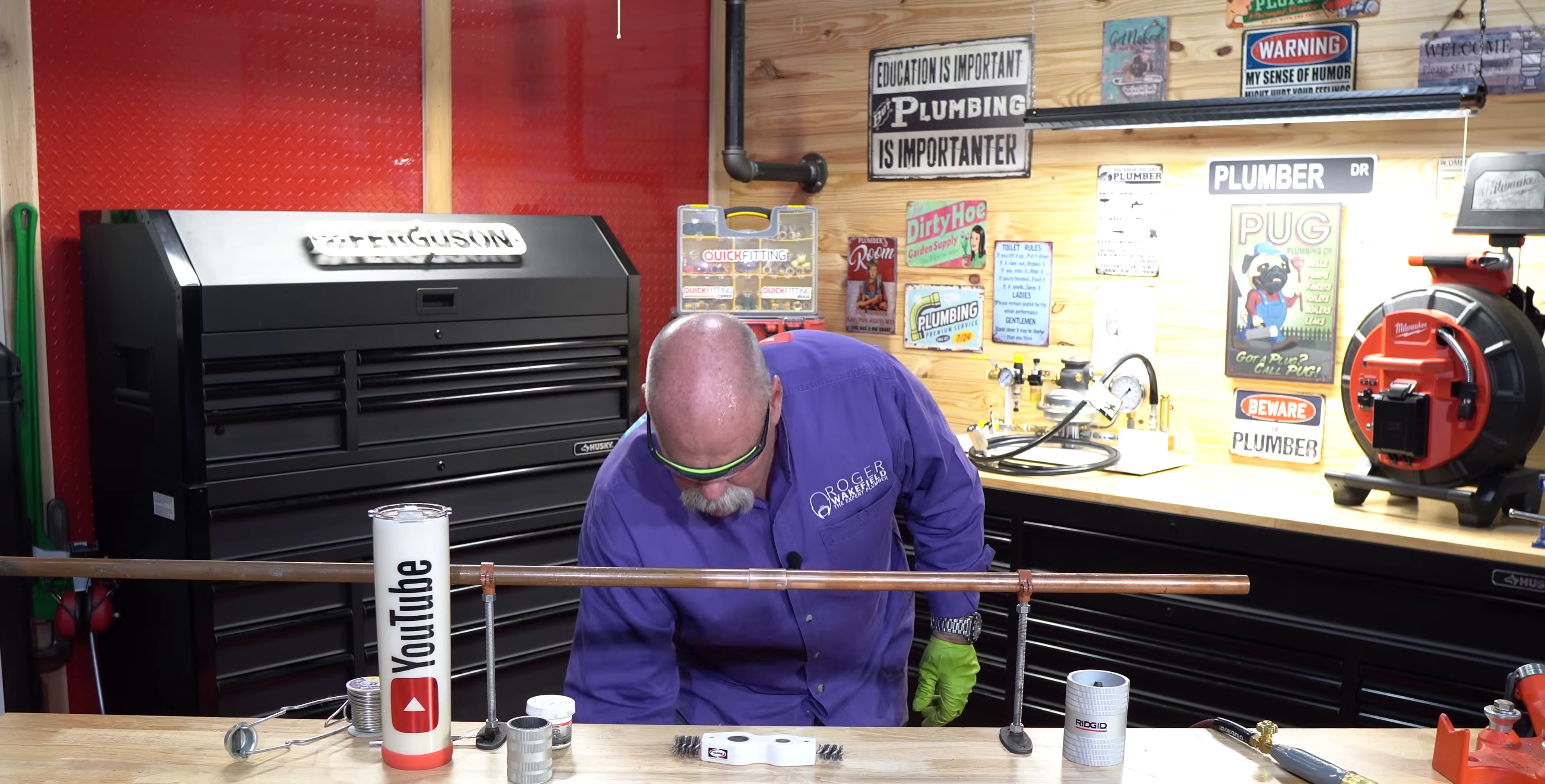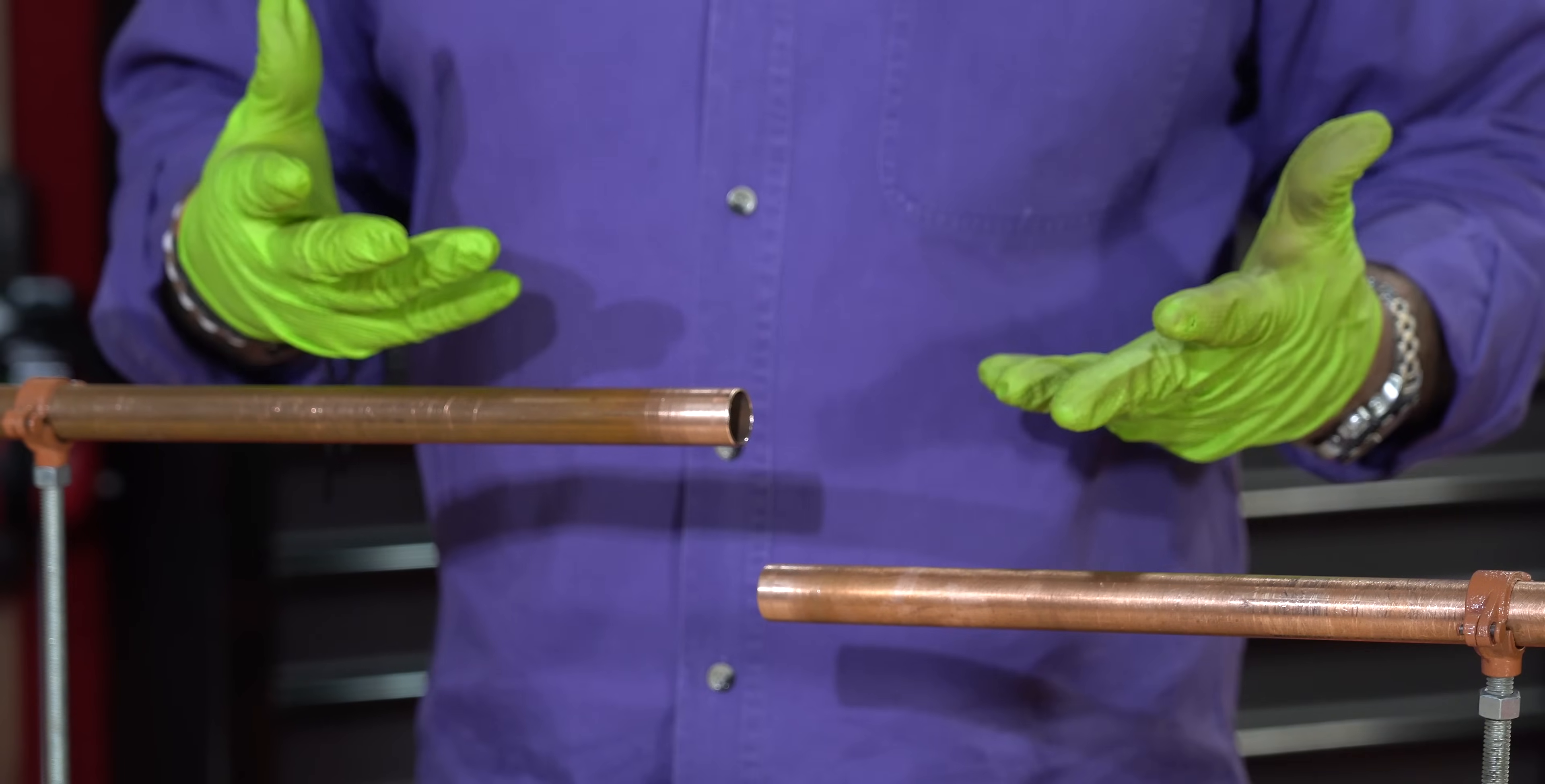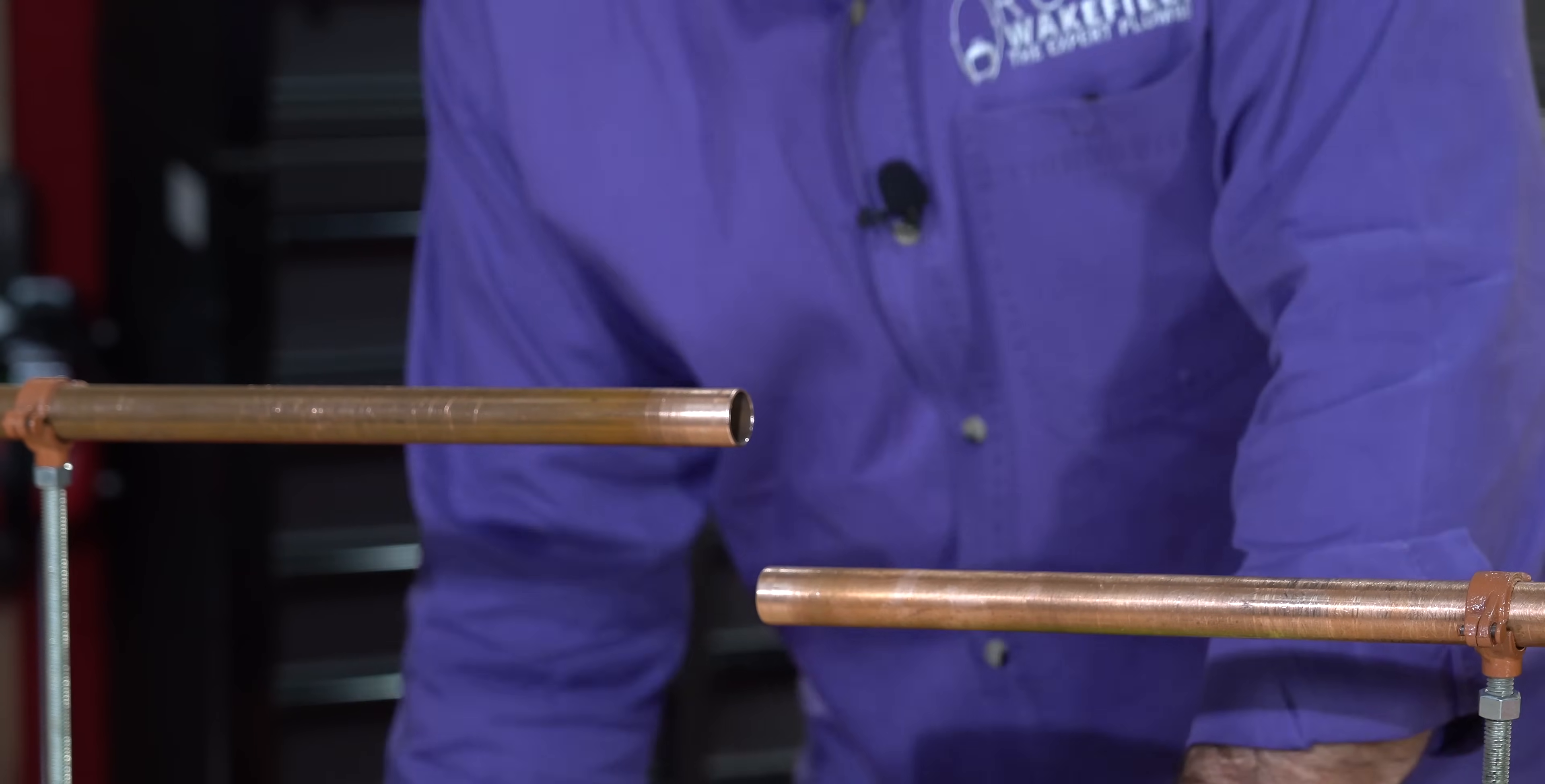Now, the difference in this and a solder joint is on a solder joint, I would actually have to sand all this. Now, you don't have to clean the outside of it for a press fitting, but if there was a sticker there, if there's anything that I wanted to take off, I would definitely do that.